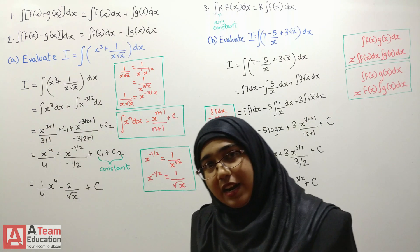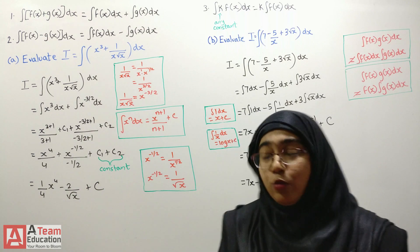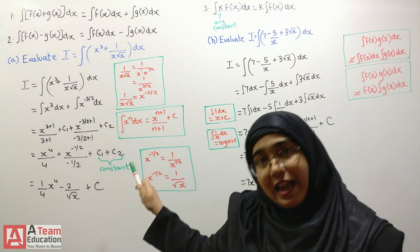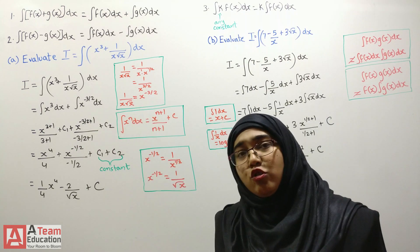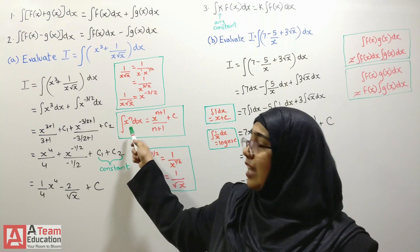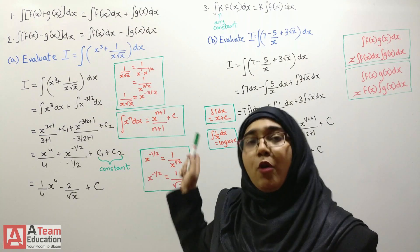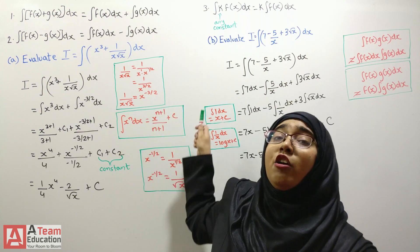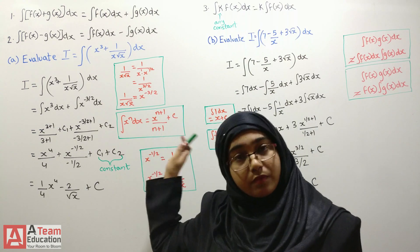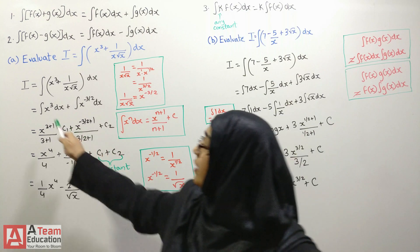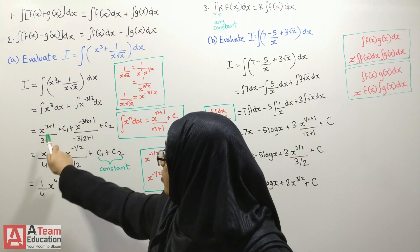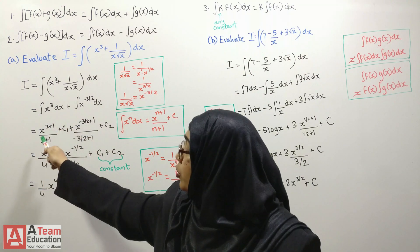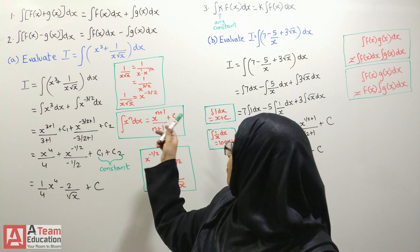Now I have two functions: x cubed and x raised to minus 3/2. The integration of x raised to n with respect to x is x raised to n+1 over n+1. That means you add one to the power and divide by the new power, plus c. So for x cubed, we get x raised to 3+1 over 3+1, plus c.